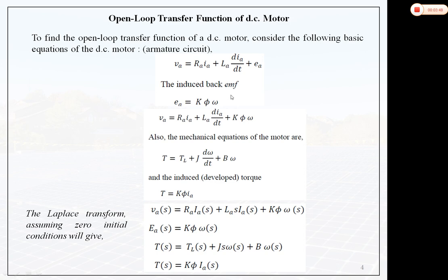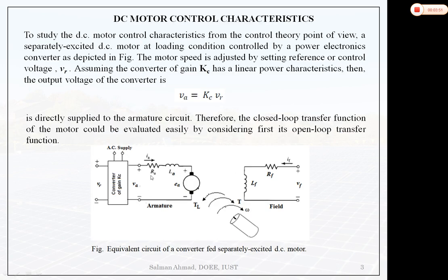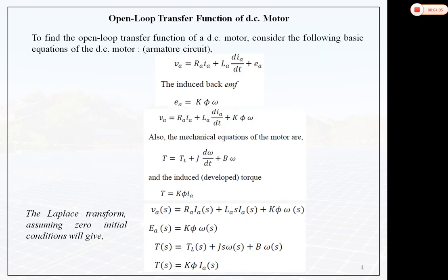From the armature circuit we can write: Va = Ra·ia + La·(dia/dt) + Ea. The induced back EMF is proportional to the product of flux and speed, so Ea = K·φ·ω. Substituting this into the first equation gives: Va = Ra·ia + La·(dia/dt) + K·φ·ω.